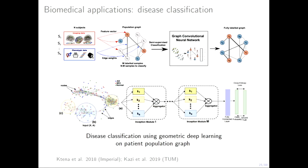There have also been interesting applications in the medical imaging community. One work, done in the group of Daniel Rueckert, considered a network of patients where each vertex is a patient, and patients are linked by edges if they have similar properties — similar age, gender, or disease history. They showed that this way you can predict whether a patient has a certain disorder better than if you consider each patient separately. There is a kind of crowd wisdom when you accumulate information from multiple patients in a smart way.